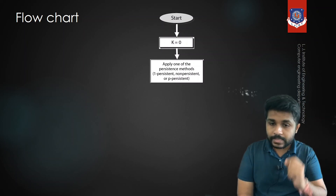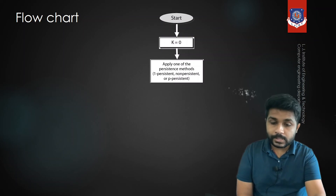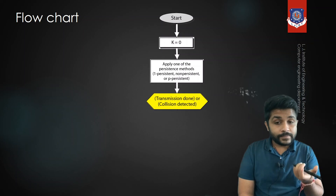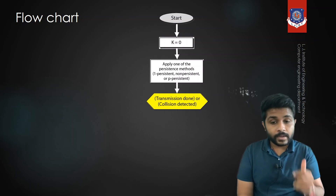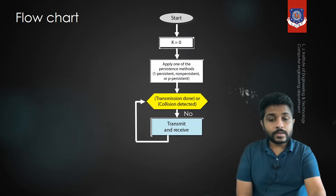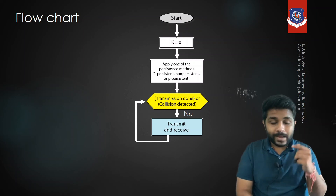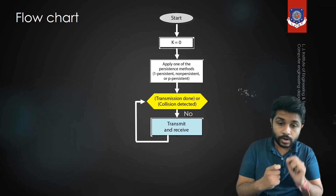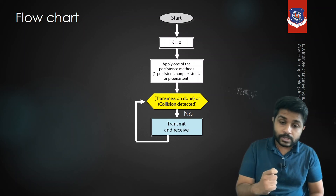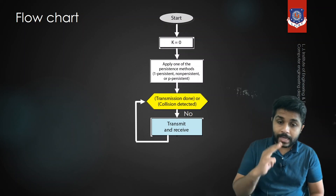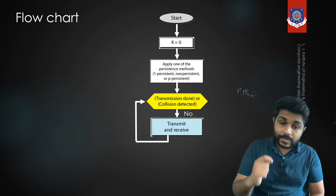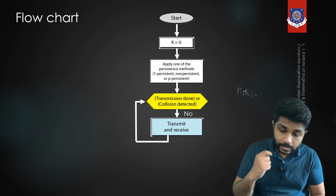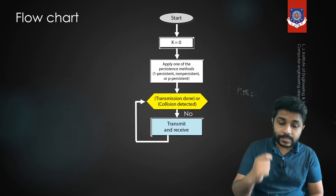In the first step, before sending data the sender senses the channel using a persistent method. If the channel is found idle, the sender transmits data. While sending, the sender continuously checks whether there is a collision or not — it sends data and simultaneously monitors for collision.